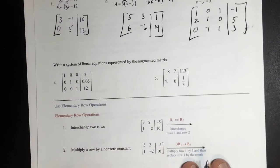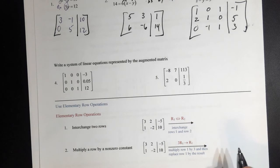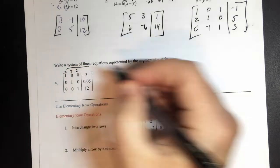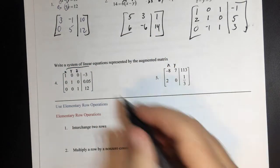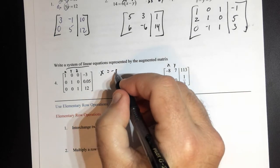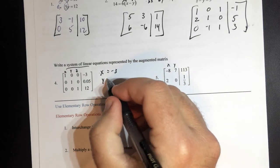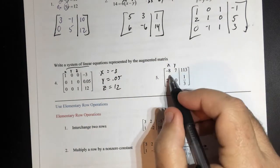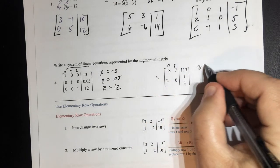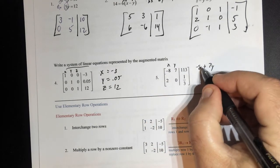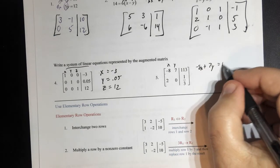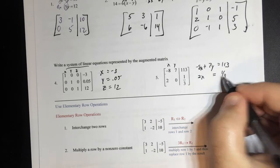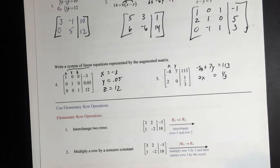We can take the augmented matrix and write the linear system of equations from it. This would be x, y, z. This would be x and y. So I'd have x is equal to negative 3, y is equal to 0.05, and z is equal to 12. If I take this one here, I'd have negative 8x plus 7y is equal to 1.13. And then I'd have 2x — there's no y — is equal to 1.13. And we're done. So that's just making your matrix.